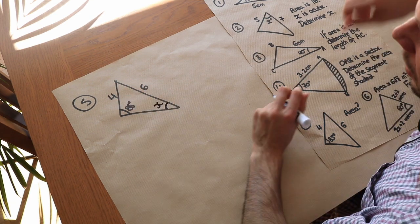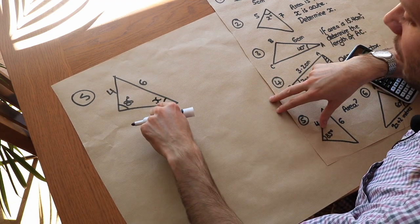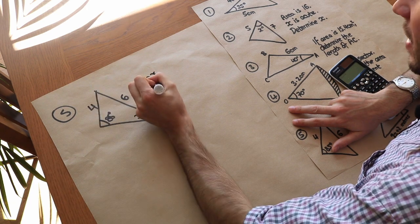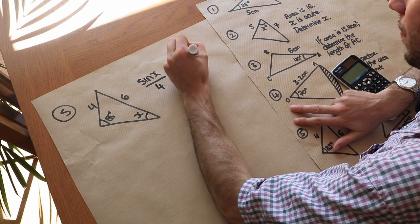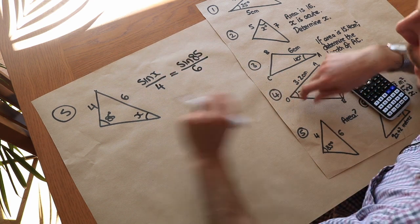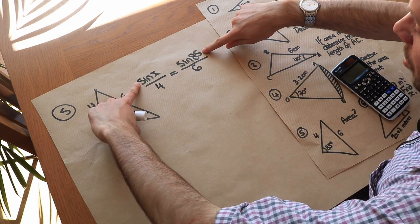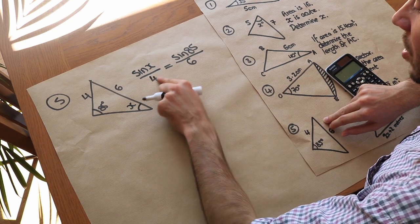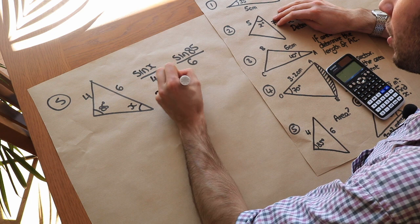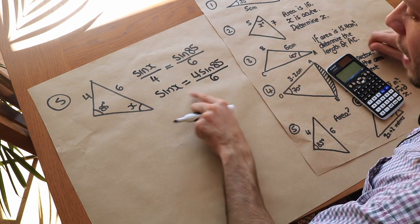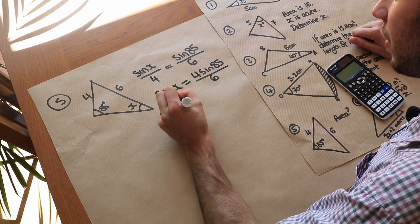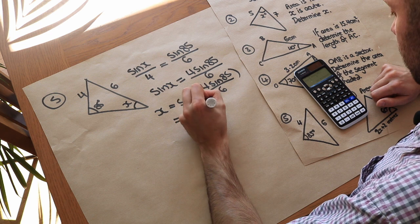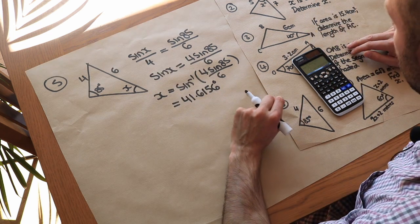Since we have a side-angle pair and another side-angle pair, we use the sine rule: sine X over its opposite side equals sine of the other known angle over its opposite side. We put sine of the angles on top and their opposite side lengths in the denominators. Multiplying across and applying inverse sine gives X equals 41.6156 degrees — keeping full decimal precision to avoid rounding errors.